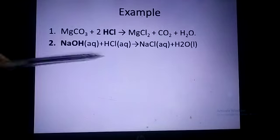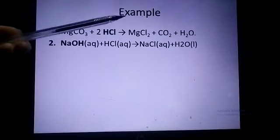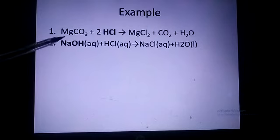Example reactions: Magnesium carbonate reacts with HCl to form magnesium chloride, carbon dioxide, and water (MgCO₃ + 2HCl → MgCl₂ + CO₂ + H₂O). Sodium hydroxide reacts with HCl to form sodium chloride and water (NaOH(aq) + HCl(aq) → NaCl(aq) + H₂O(l)).